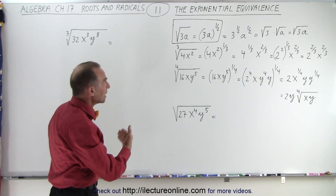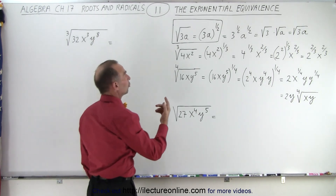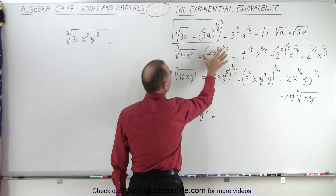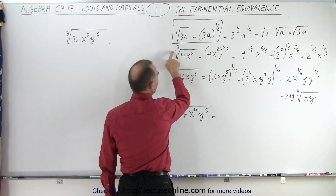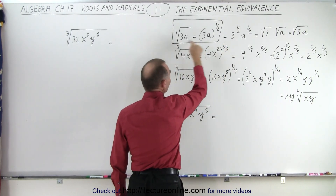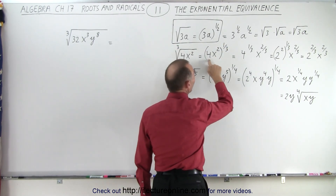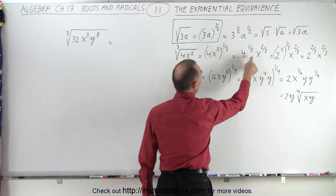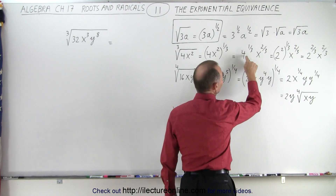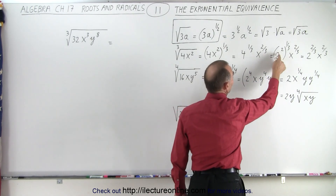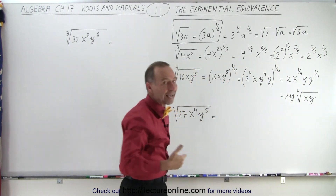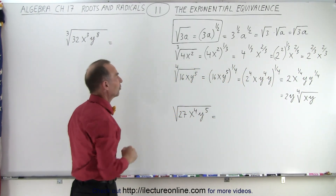Now if we're going to use the exponential equivalence, notice what we can do — we can apply the exponent to each of the exponents inside the parentheses. So instead of writing the cube root of 4x squared, we can write 4x squared to the one-third power; that means the same thing. Then we have 4 to the one-third power times x squared to the one-third power. We multiply exponents to get two-thirds. And realizing that 4 is the same as 2 squared, we can also get 2 to the two-thirds and x to the two-thirds. So that's the exponential equivalence of what we started with.